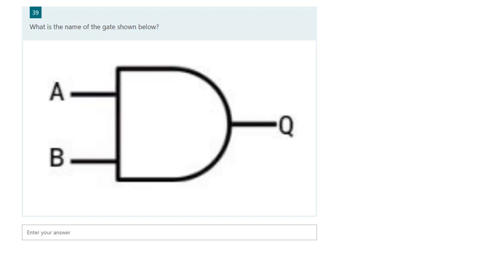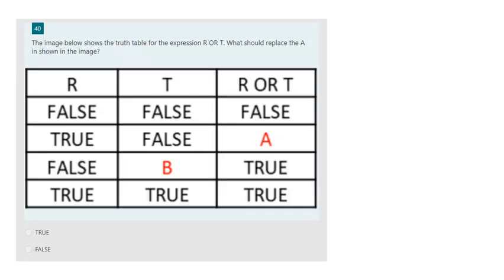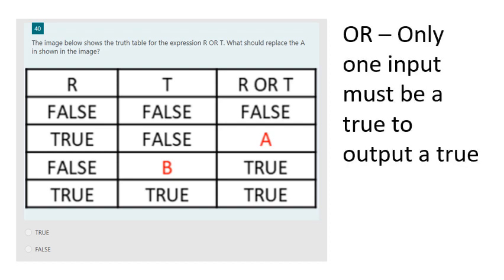This is an AND gate — it's called that, has two inputs and one output. But thinking about this — remembering the rule that only one input must be true to output true — this is actually an OR gate with inputs R and T. R is true and T is false, so the output must be true because at least one input is true.